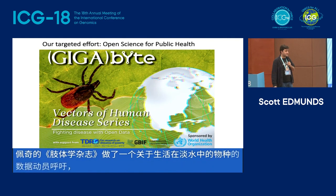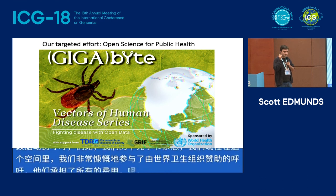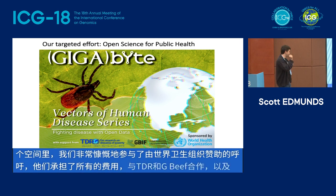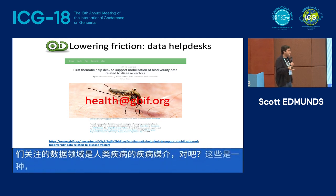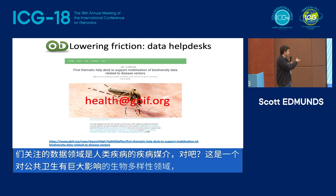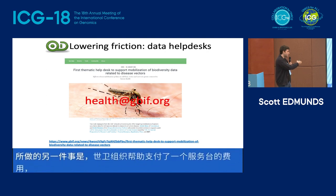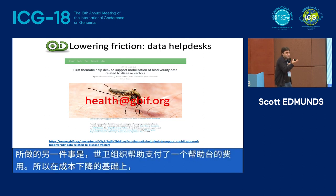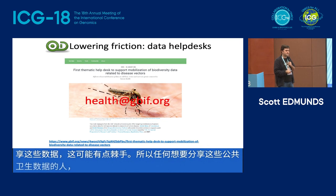With our Gigabyte journal, we've now got into this space. We participated in a call very generously sponsored by the World Health Organization, who covered all of the costs, in partnership with TDR and GBIF. The area of data we focused on are disease vectors of human diseases. To further reduce friction, WHO also helps pay for a help desk — on top of the costs going down, there are extra people on hand to help researchers share this data. Anybody who wants to share this public health data can email health@gbif.org and somebody will help them share it.